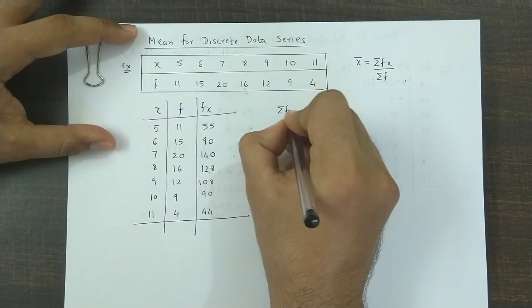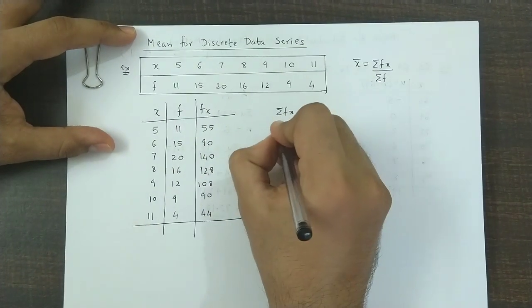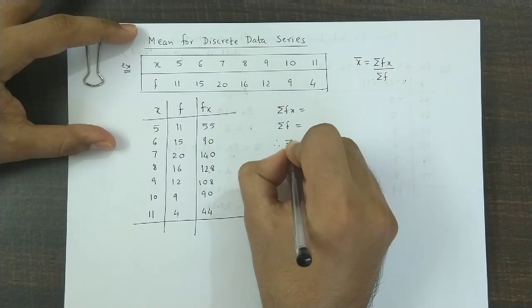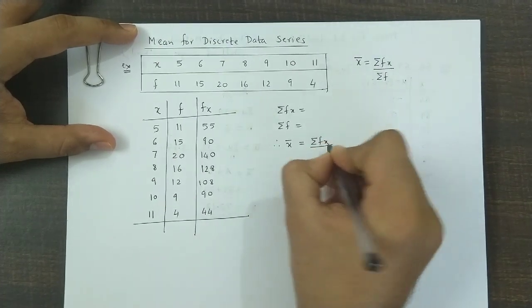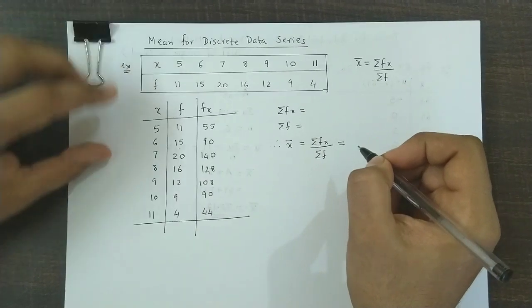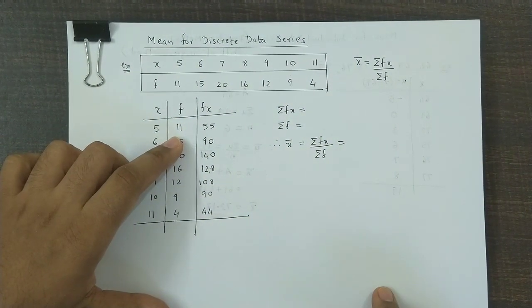We need summation of fx and this total of fx column. We also need the total frequency, and using these two we could obtain x̄ as summation of fx divided by summation of f. Let us add up these two columns and see what totals we obtain.